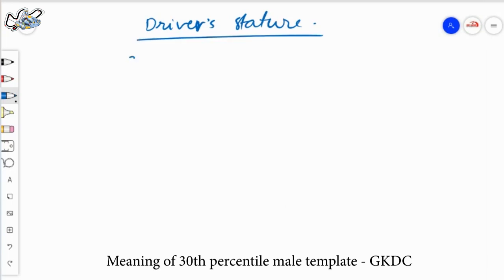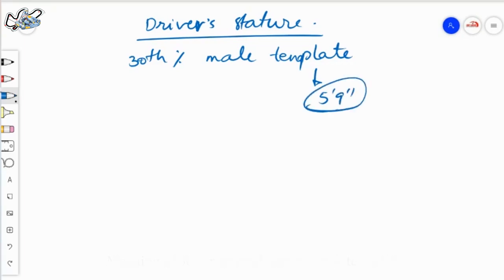If we say 30th percentile male template, we basically say approximately 5 foot 9 inch, approximately from 5 foot 8 inch to 5 foot 9 inch.